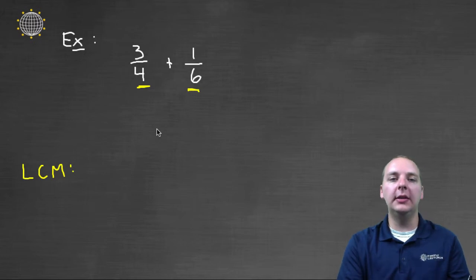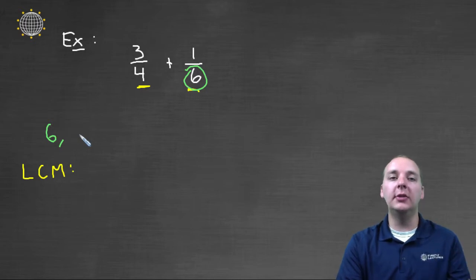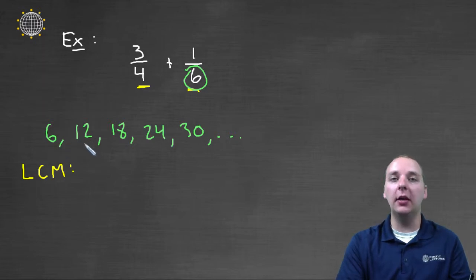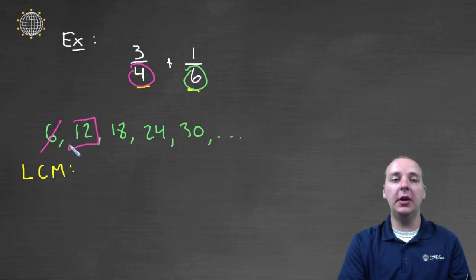The informal way of finding a least common multiple is to start with the larger of the two numbers, and then start adding multiples of that on top of itself until you find one that's also a multiple of the other number. So all of these, if I take six and then twelve, and then twelve and six more make eighteen, and six more make twenty-four, and six more make thirty. All of these are multiples of six, because I just keep taking larger and larger multiples of six.